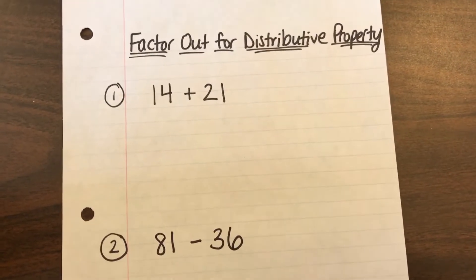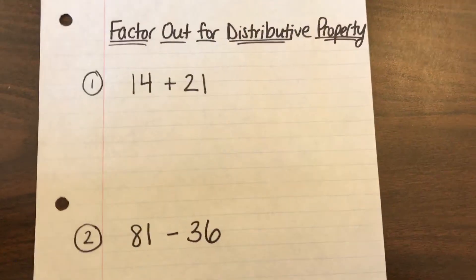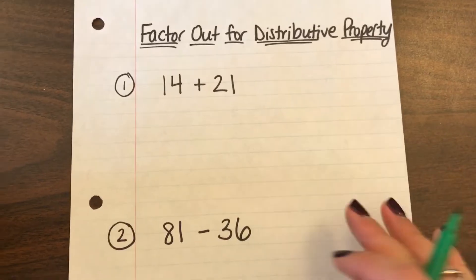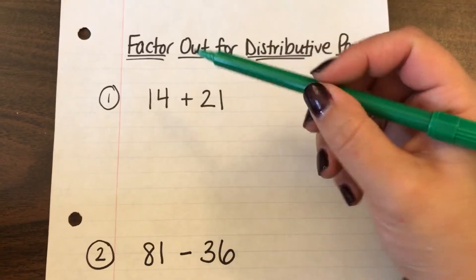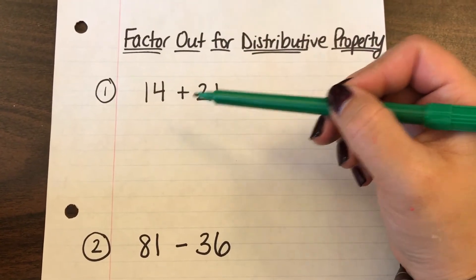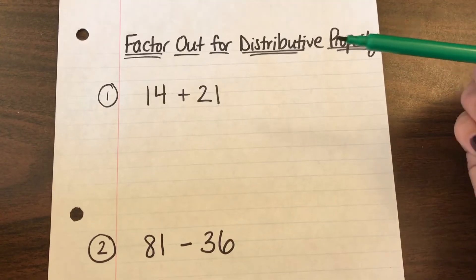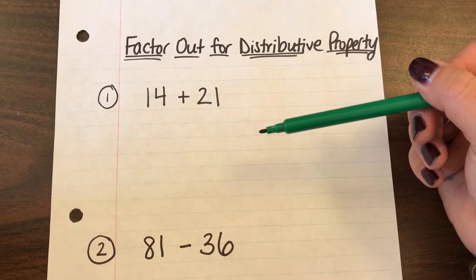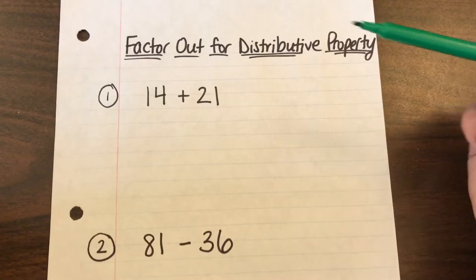In this video I'm going to show you how to factor out for the distributive property. If you look at number one you've got the addition problem of 14 plus 21 and what I want to do is write an expression that is representative of the distributive property.